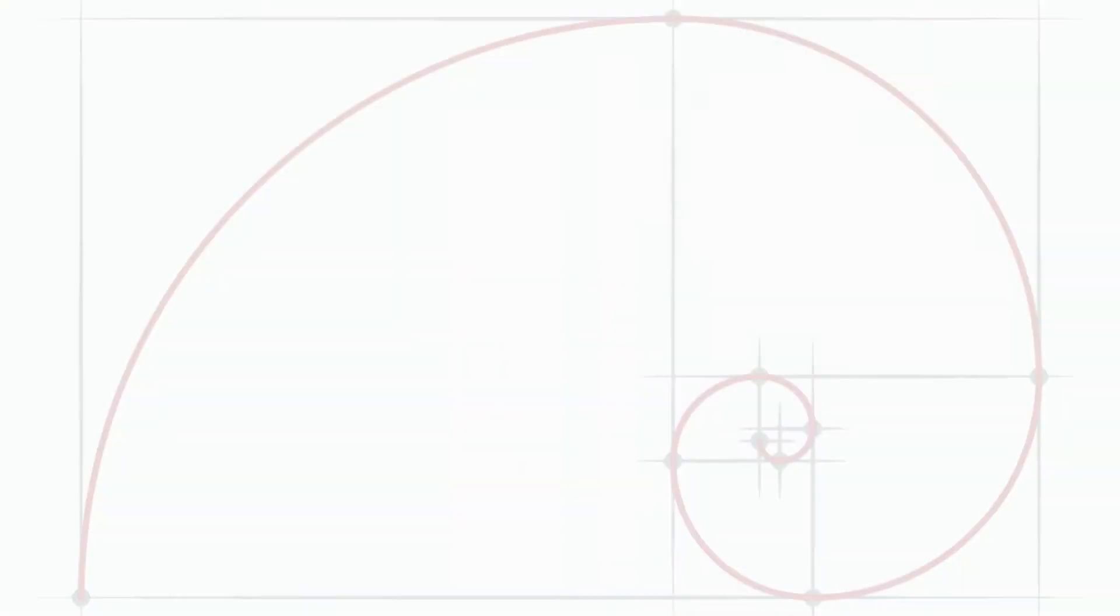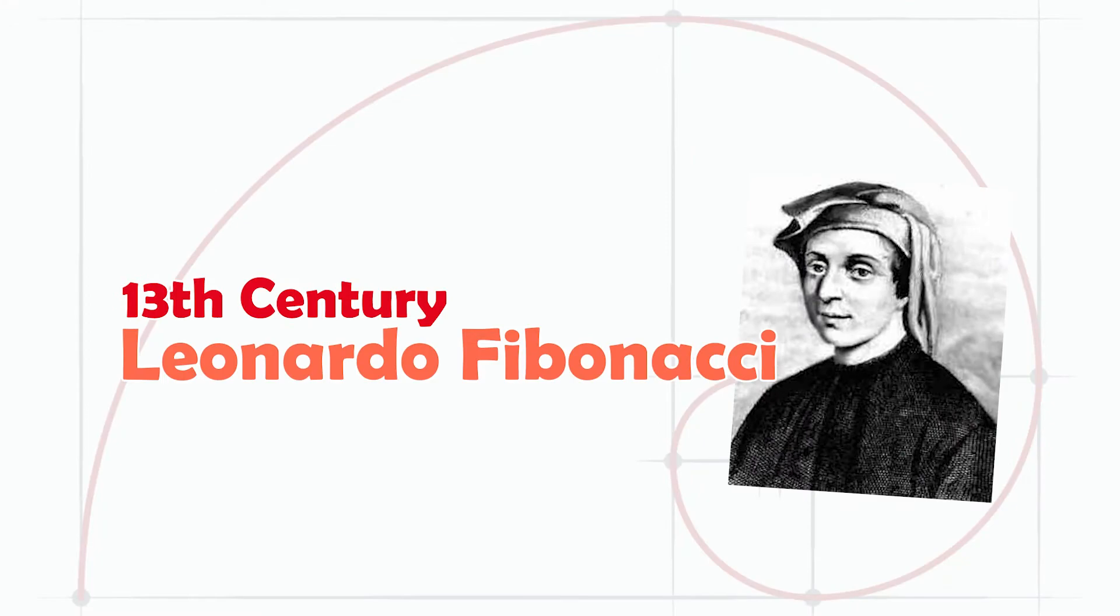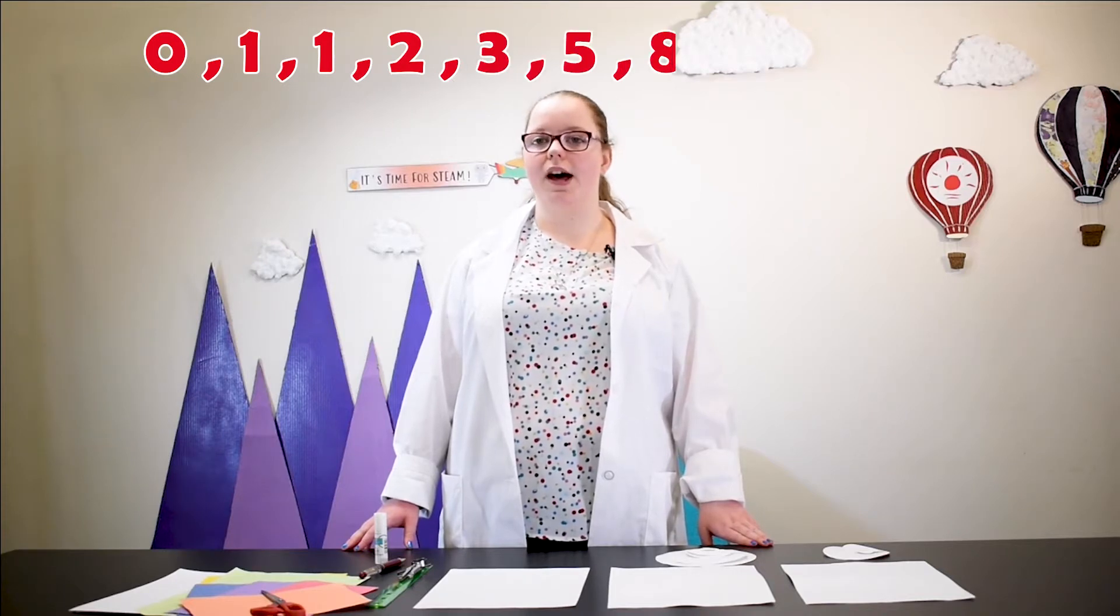The Fibonacci sequence was developed in the 13th century by an Italian mathematician commonly referred to as Leonardo Fibonacci. The sequence is 0, 1, 1, 2, 3, 5, 8, 13, 21, and so on.